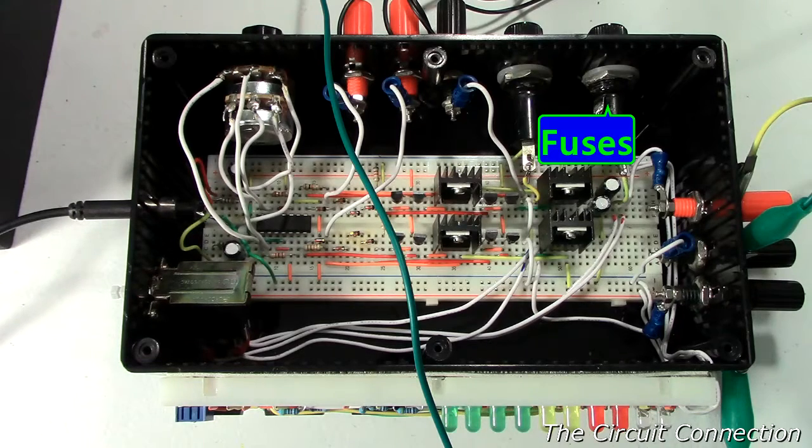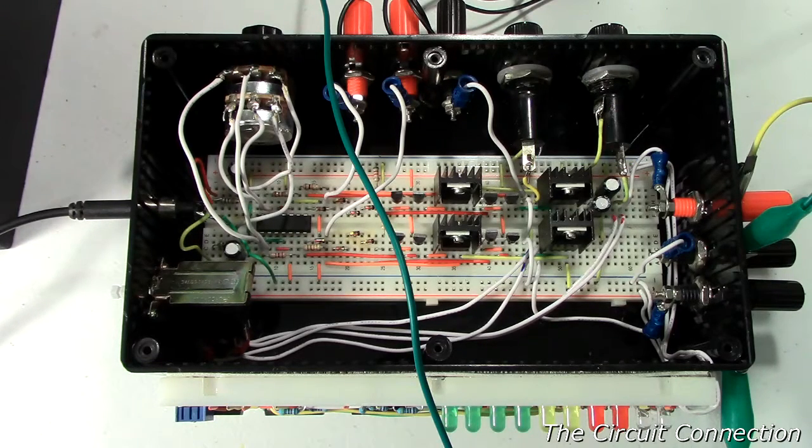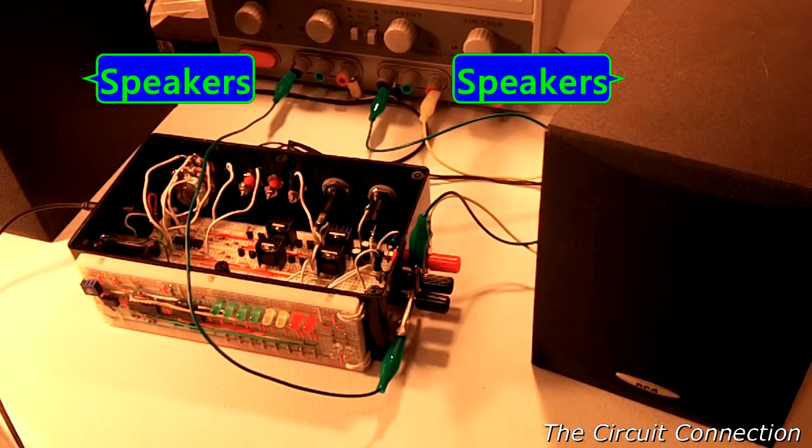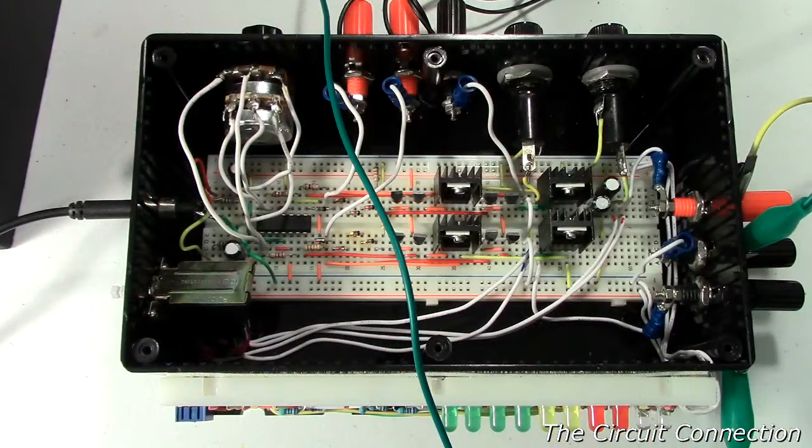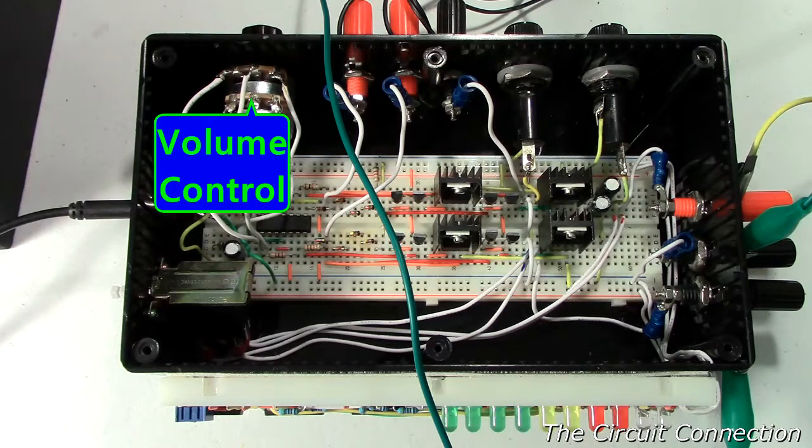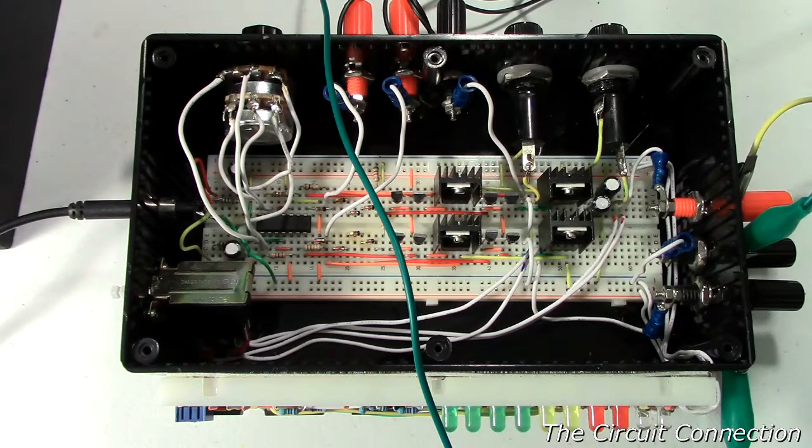And after that I also have a stereo speaker output. Then next to that I have a volume potentiometer which controls the volume of the amplifier, the gain of the amplifier.